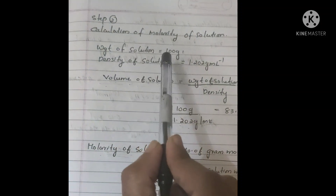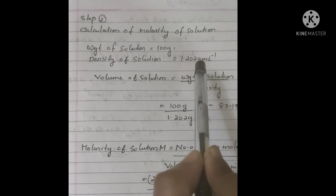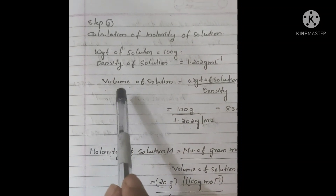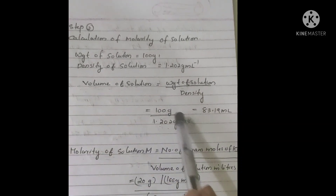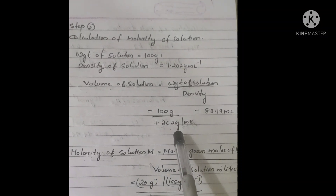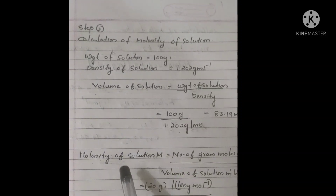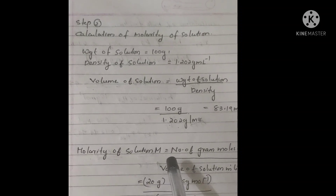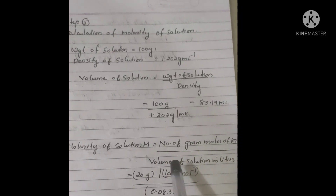Next step: Calculation of molarity. Weight of solution equals 100 grams. Density of the solution equals 1.202 grams per milliliter, as given in the question. Volume of solution equals weight of solution divided by density — 100 grams divided by 1.202 grams per milliliter — equals 83.19 milliliters. The equation for molarity equals number of moles of potassium iodide divided by volume of solution in liters.